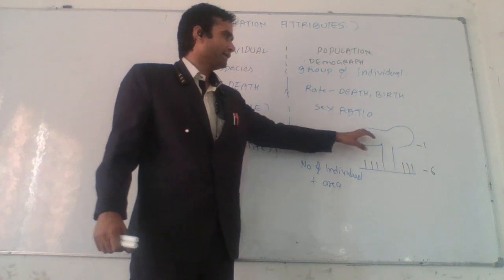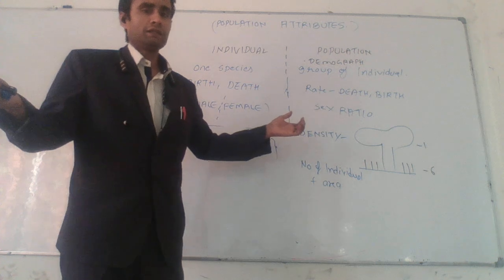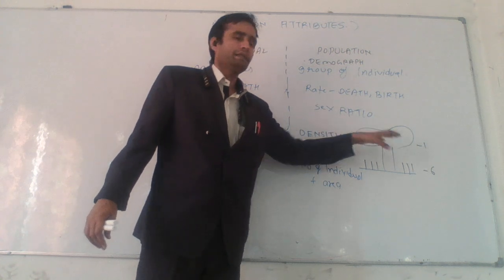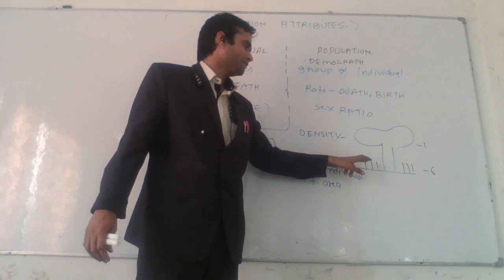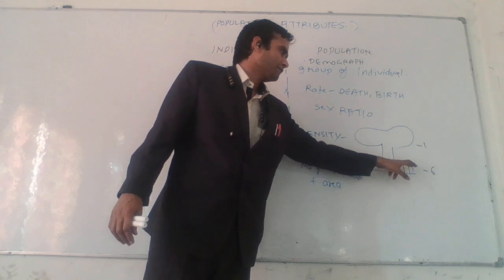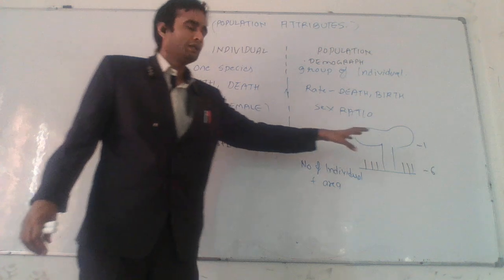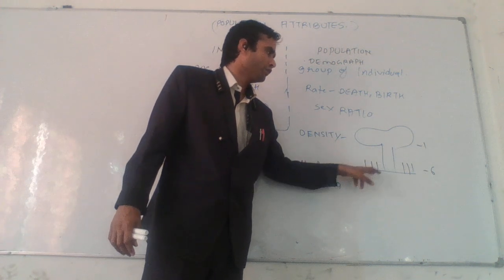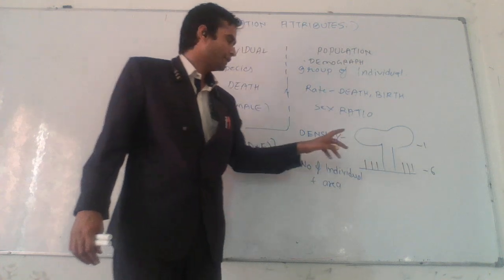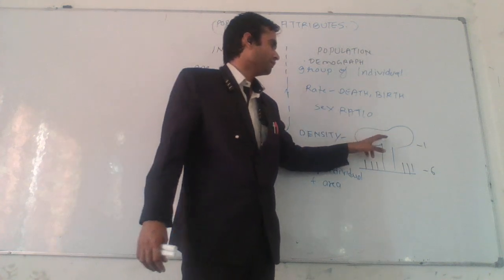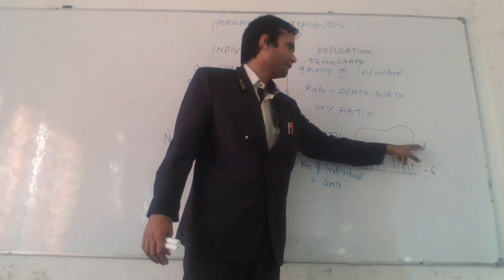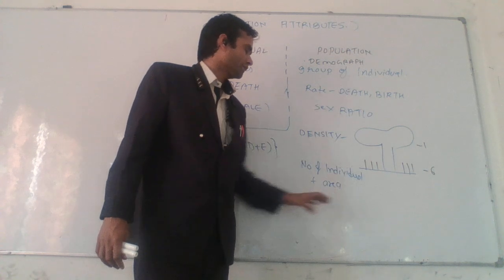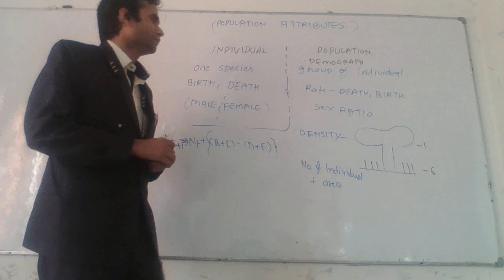Suppose there is one banyan tree. Its area is very large — leaves and stem are very large, so it will cover more area. And there is a small species with 6 herb individuals. They take less area but have more individuals. So the density of the large banyan tree is more because its area is more. Number of individuals plus area counts the density of the population.